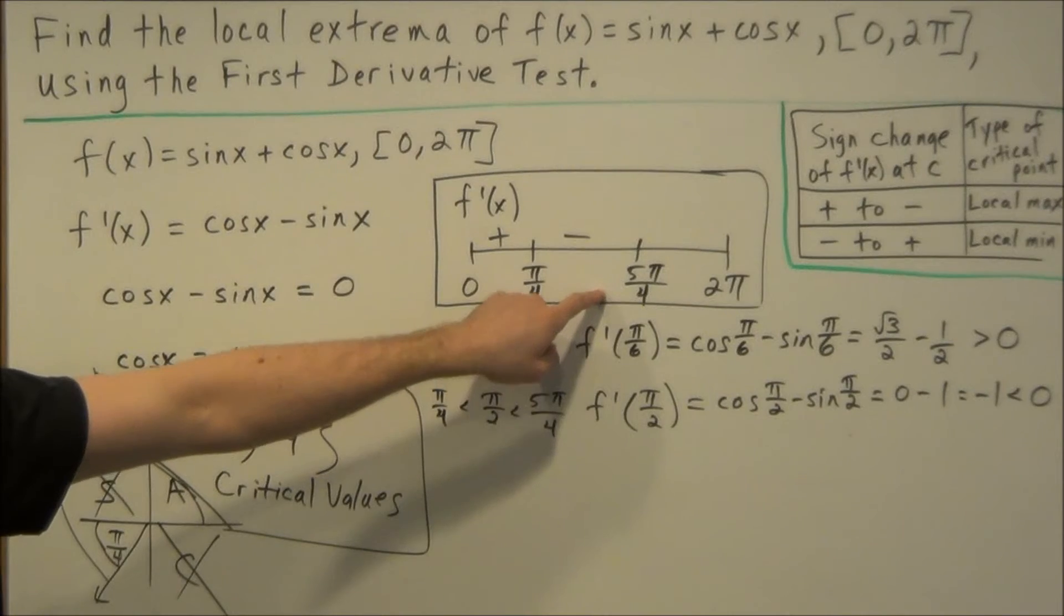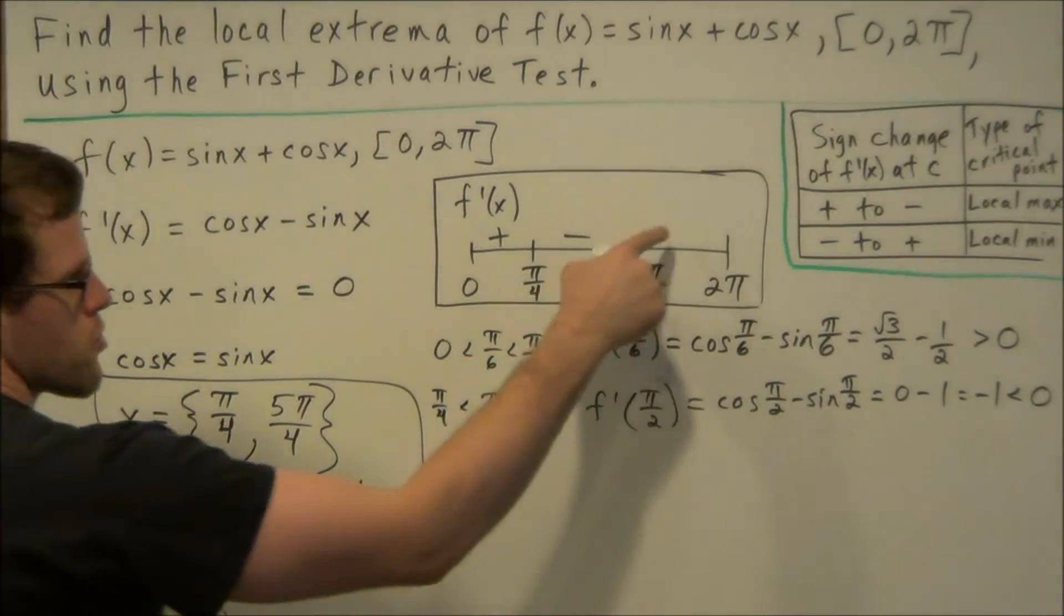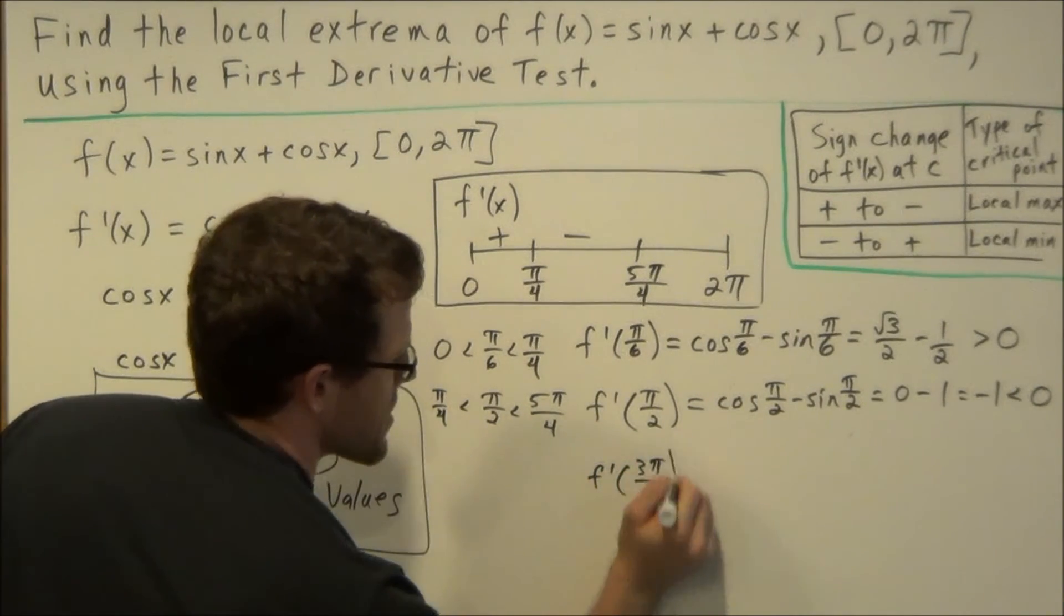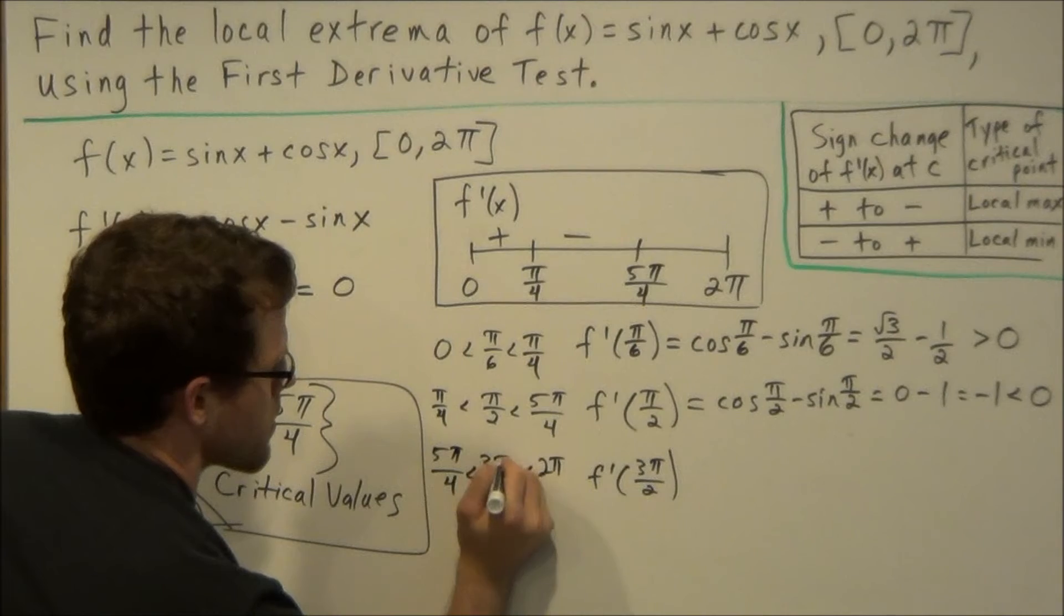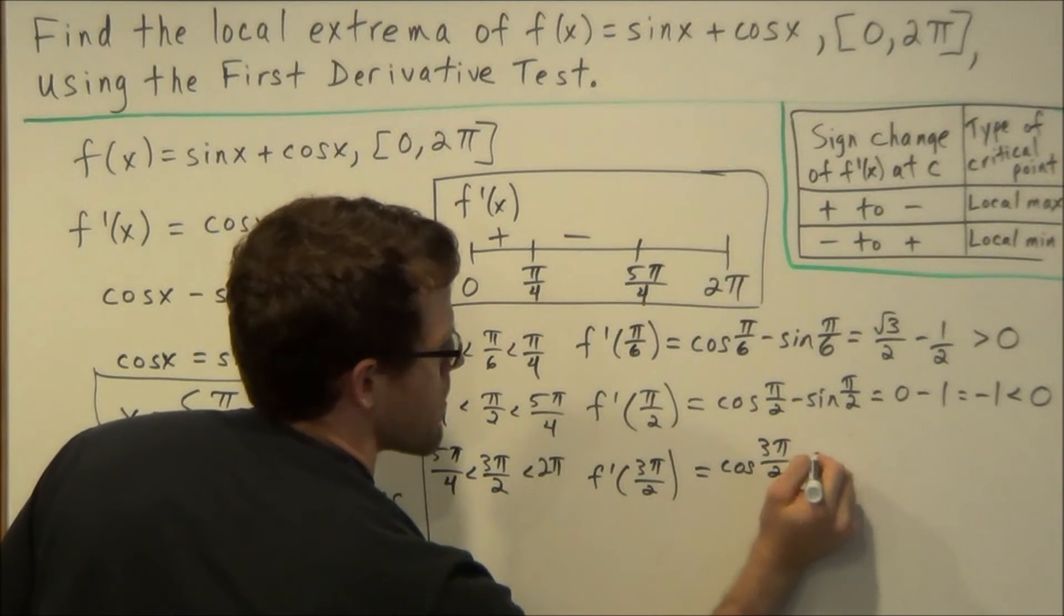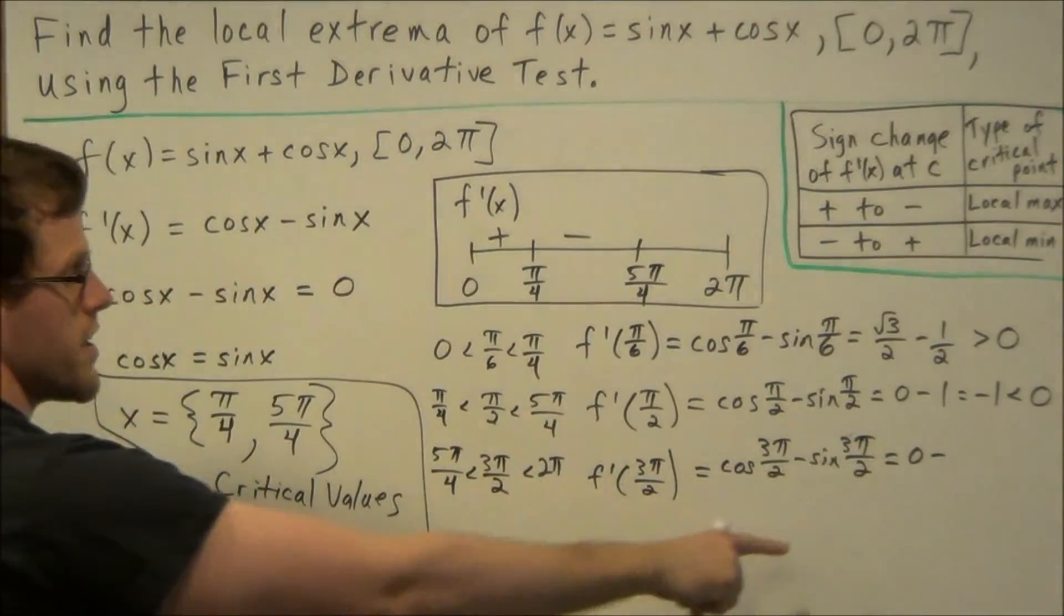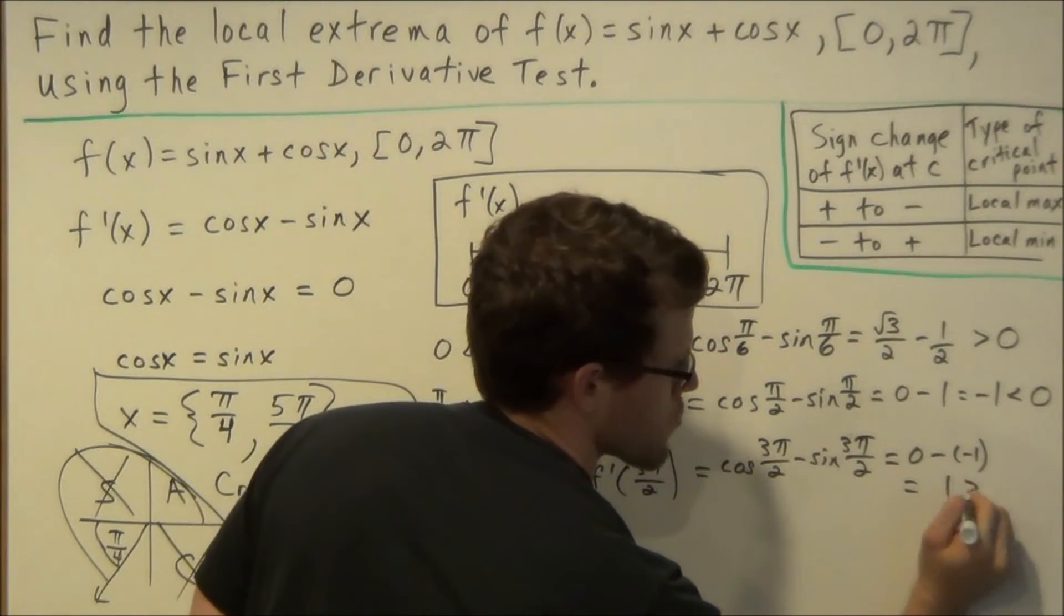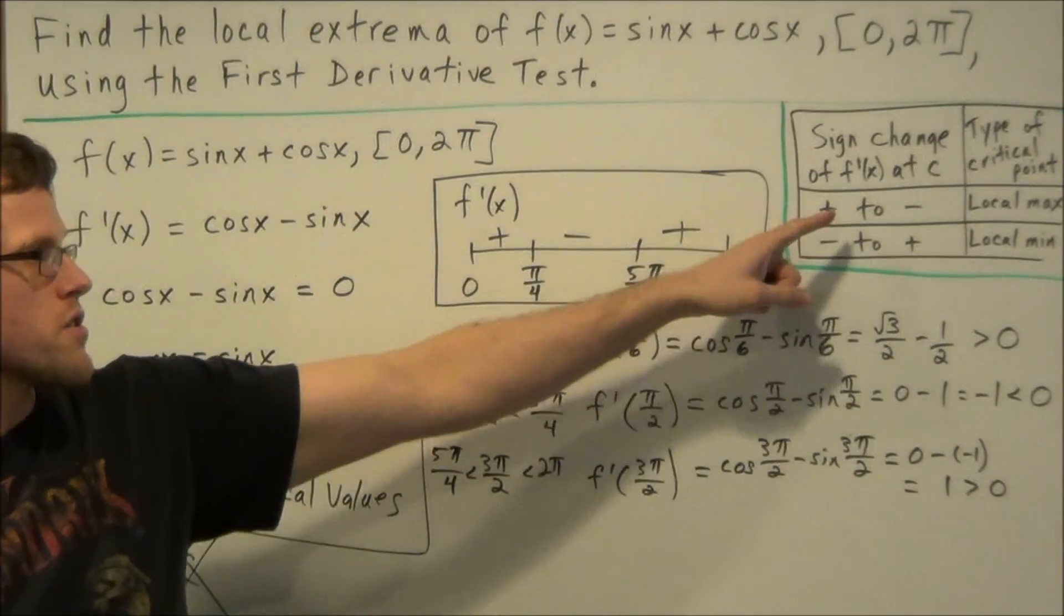So if we pick 270 degrees or 3π/2, that would be an appropriate value to plug into our first derivative. So we're going to plug in 3π/2 because that value is between 5π/4 and 2π. So if we work this out here, that's going to give us cosine 3π/2 minus sine 3π/2, which gives us 0 minus, and sine at 3π/2 is negative 1. So this will give us minus minus 1 is positive 1, which is greater than 0. Which allows us to label our last subinterval here as positive.